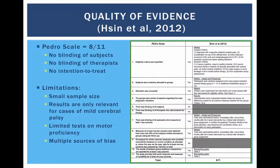This trial scored well on the PEDro scale, with a rating of 8 out of 11. The main area that let it down was that neither the subjects nor the therapists were blinded, which can be a source of bias. However, with this type of intervention, it is almost impossible for them to be blinded, as it is quite easy to tell which treatment you are receiving or administering. The study also failed to advise of the intention to treat, in that they only treated one group and did not have a crossover design. Other limitations include the small sample size, results only being relevant for children with mild cerebral palsy, limited tests and outcome measures on motor proficiency compared to other studies, and that one of the major assessments was completed by the child's parent, which could be another source of bias.